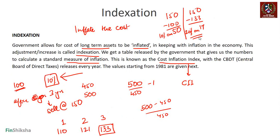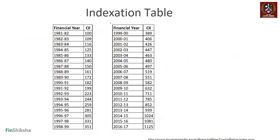For most instruments, the 20% with indexation is now mandatory. In this example, 20% on 17 is 3.4, whereas 10% on 50 is 5 — so you prefer 3.4. Indexation is beneficial because it allows you to inflate the cost, thereby reducing the taxable capital gain. That's the broad objective of indexation.